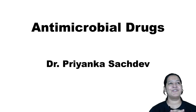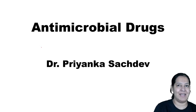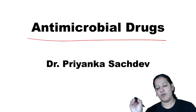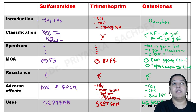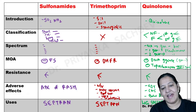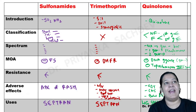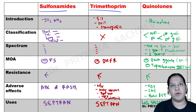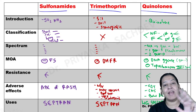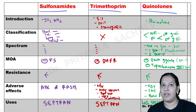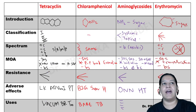Welcome to this session. I'm Dr. Priyanka Suchdev and today I am continuing my antimicrobial series. In antimicrobial drugs, we have already completed the drugs which inhibit nucleic acid synthesis either directly or indirectly — that is sulfonamides, trimethoprim, and phenolons — which inhibit DNA or RNA synthesis.